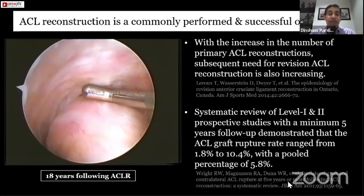So 5.8% of our ACLs are likely to fail. We also know this is based on a normal population. In a high-risk group of athletes only, these percentages might go right up to 15 or 20%, as has been seen with adolescent females.